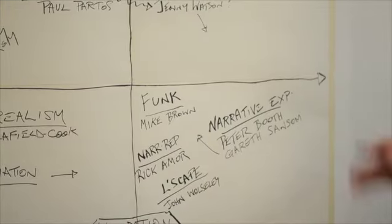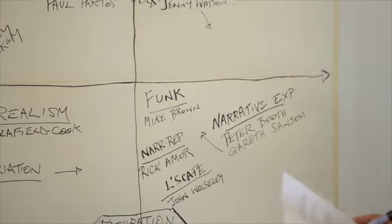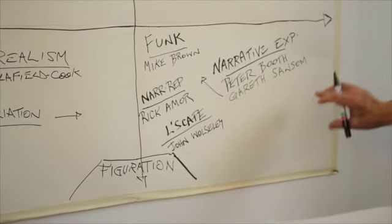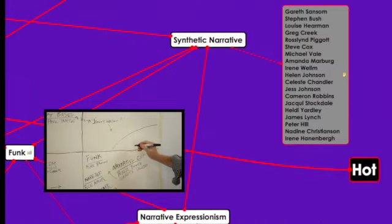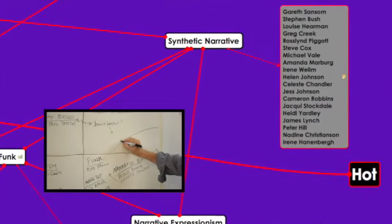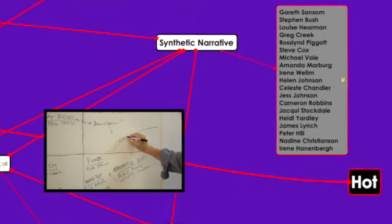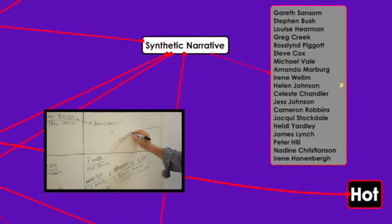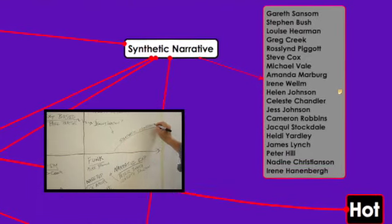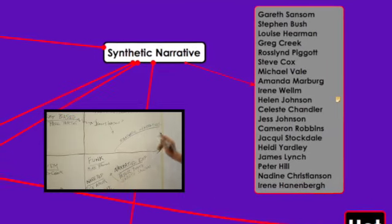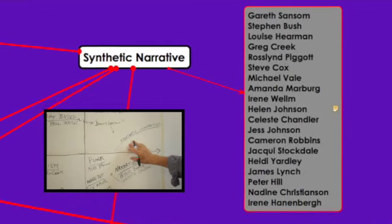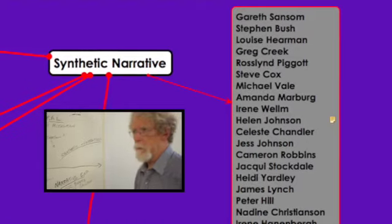The most populous area in my map actually sits in this section here. And I've called it synthetic narratives. And this is, if you like, the response of Melbourne painters to postmodernism, I guess. It's the easiest way to put it.